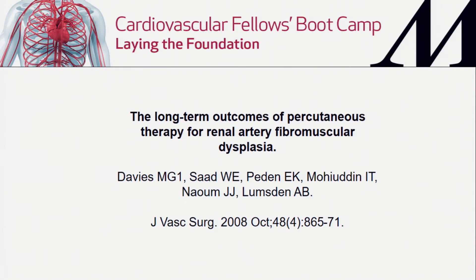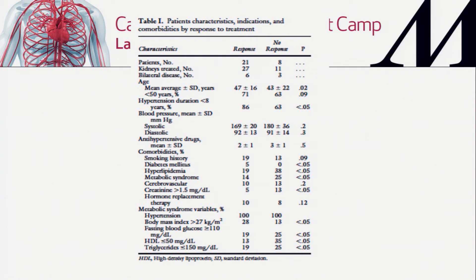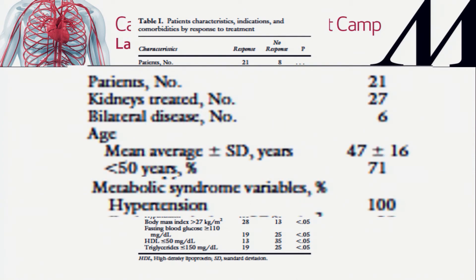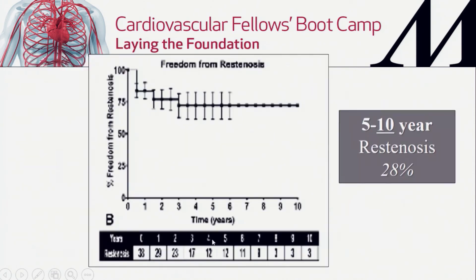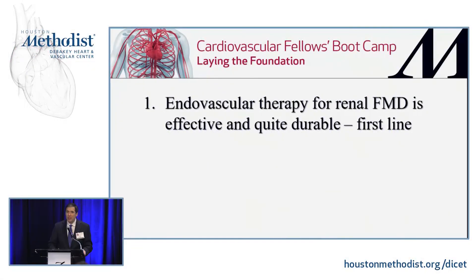Regarding outcomes, a publication from Methodist by Davies and Lumsden looked at a series of 27 patients. Mean age was 47, with 71% under 50; 100% were hypertensive. Five-year primary patency after angioplasty was about 66%. With reintervention, assisted patency was 87% at five years. About 72% of patients were free of restenosis at 10 years — so balloon angioplasty for renal FMD works quite well and durably.